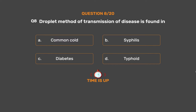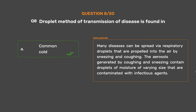The correct answer is Option A: Common cold. Many diseases can be spread via respiratory droplets propelled into the air by sneezing and coughing. The aerosols generated by coughing and sneezing contain droplets of moisture of varying size that are contaminated with infectious agents.